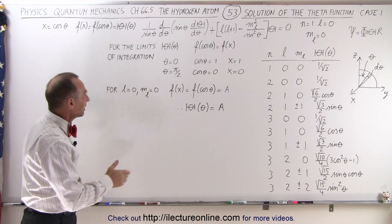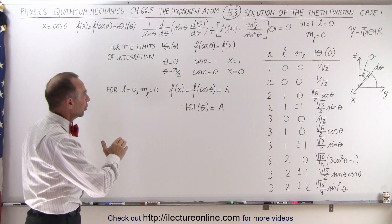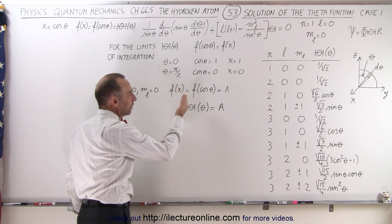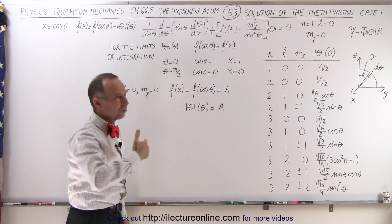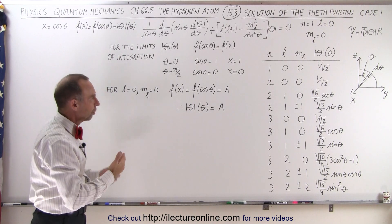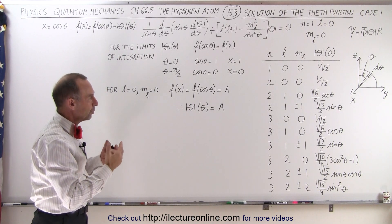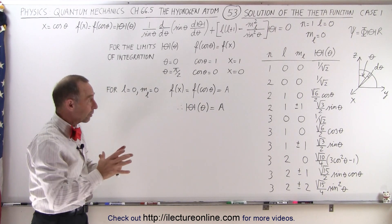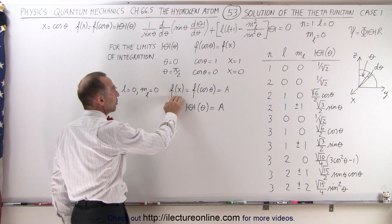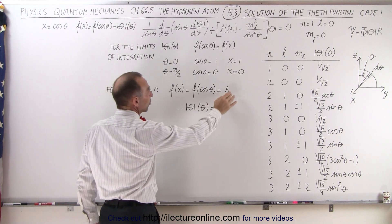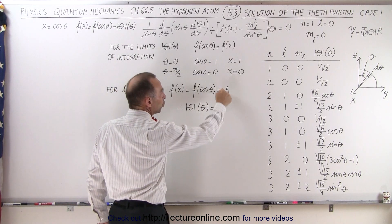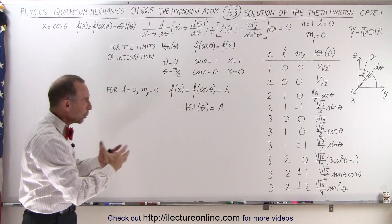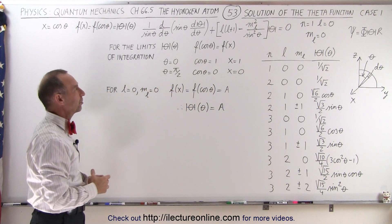We realized that the solution f of x was going to be equal to one. That's the specific solution for not having it normalized. So, in order to find the correct solution when we normalize it, instead of using one, we're going to set it equal to a. Then we're going to normalize the function to find the proper value for a. We know it's going to be a constant.